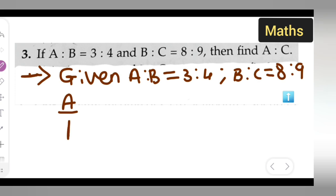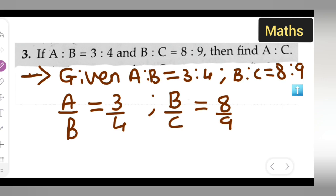Write down A upon B is equal to 3 upon 4. Then put a comma. Then next is what is given over here: B upon C is equal to 8 upon 9. So B upon C is equal to 8 upon 9.